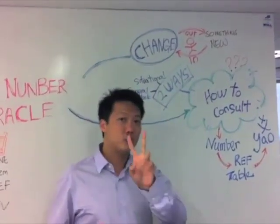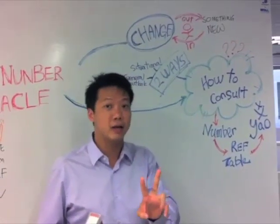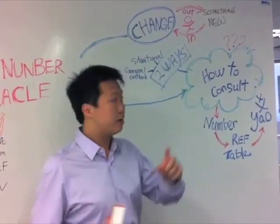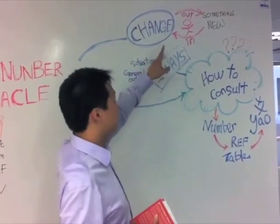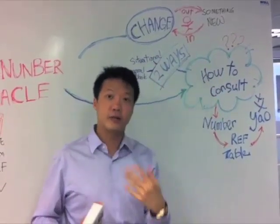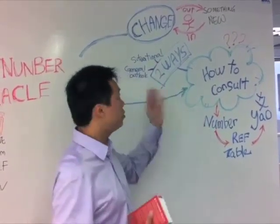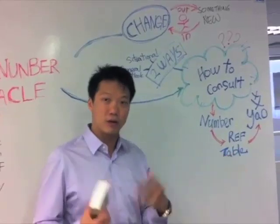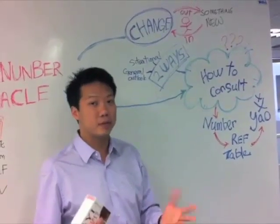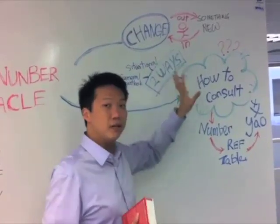Change can happen in only two ways in any person's life. First, something new comes into your life and things will change. Or, something leaves your life and your life will change. If you do nothing, nothing happens — no change takes place.